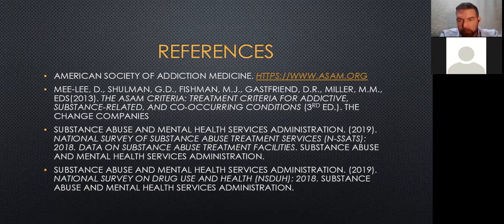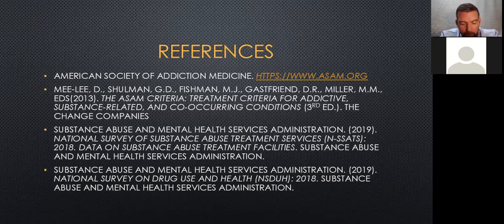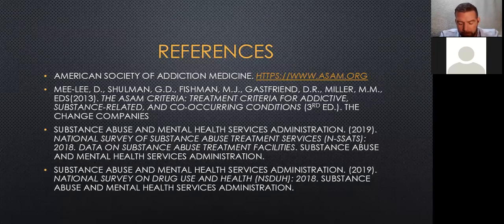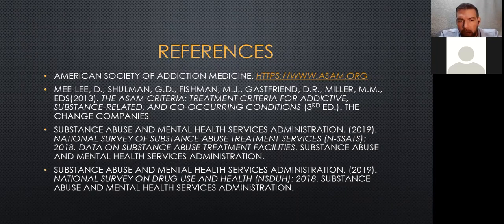Odyssey House has three main locations: our main location in Flint, Saginaw, and an office in Port Huron. We offer levels 3.5, 3.7, 3.1, 2.5, 2.1, 1, and 0.5 across our facilities — the full range or full continuum of care. Locally here in Port Huron, we offer outpatient level one and 0.5 early intervention, with outpatient counseling and multiple groups a week. As an organization, we also have a detox facility, full long-term residential, and multiple recovery houses.